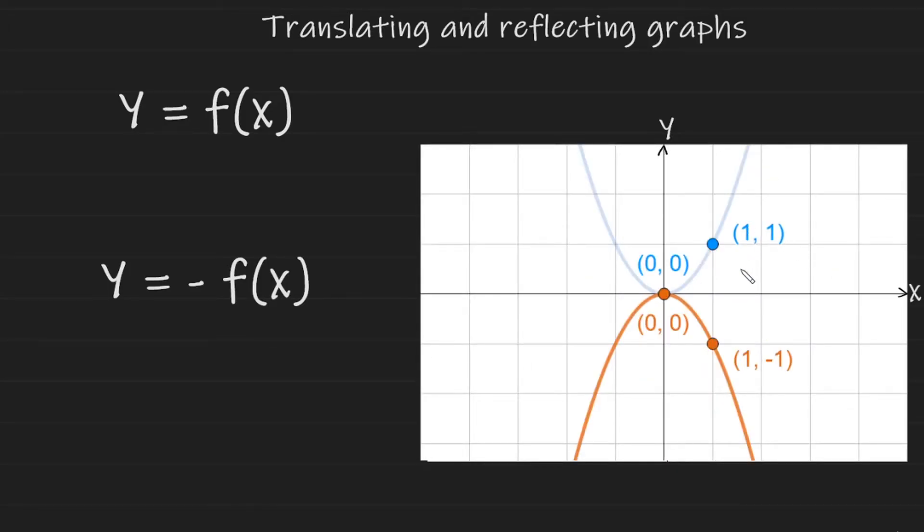If we look at the coordinates, the y values that were positive are now negative. However, this 0 remains the same, as 0 doesn't really have a positive or a negative sign.